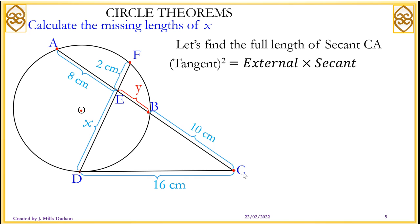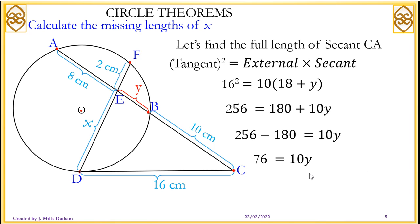So to find out the full secant CA, we know tangent squared, which is this, should equal to the exterior 10 times the full length of CA. So tangent squared is 16 squared. The external is 10. The full length of CA is 10 plus 8 plus Y, that gives you 18 plus Y. That's why it's 10 times into bracket 18 plus Y. Remember the 10 represents the external, and 18 plus Y represents the full length of the secant. Now you solve for Y by expanding the bracket. So 16 squared is 256 and you expand the bracket, 180 plus 10Y. You solve for Y. The way you solve your normal equation, subtract 180 from both sides, and you divide each side by 10. So Y is 76 divided by 10 which is 7.6.